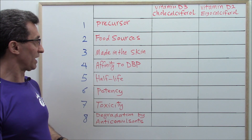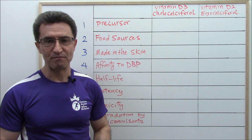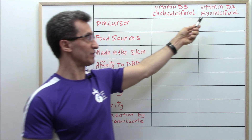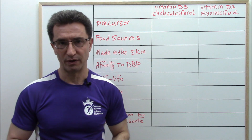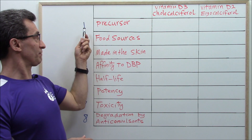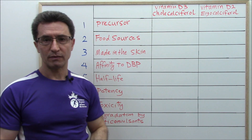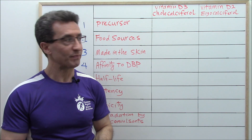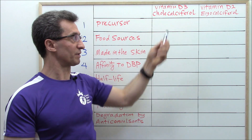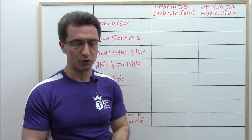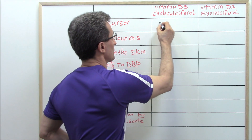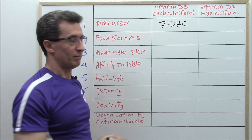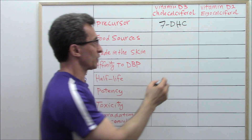As you can see on the board, I have listed eight differences between them. Vitamin D3 is known as cholecalciferol and vitamin D2 is known as ergocalciferol. Their first difference is in their precursors. A precursor is an original substance from which another substance is formed. The precursor of vitamin D3 is 7-dehydrocholesterol, but the precursor of vitamin D2 is ergosterol.